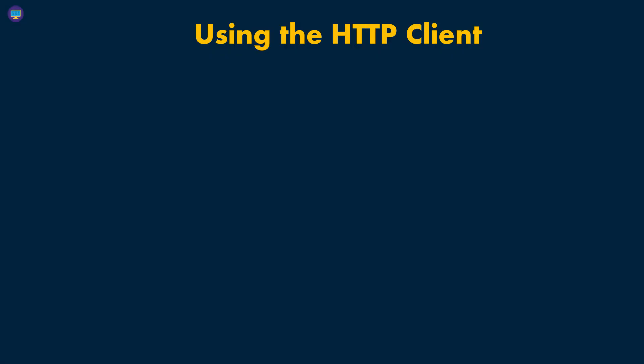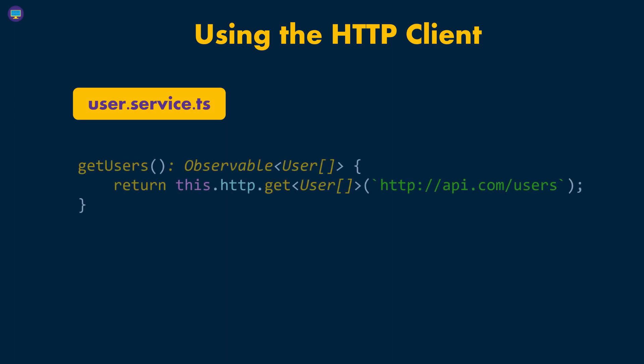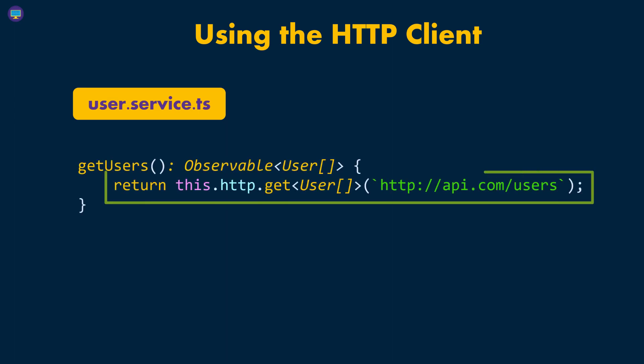Now that we have injected the HTTP client in our user service, we can make use of it in that service so that we can make HTTP requests. There are a few ways that you can make HTTP requests inside of a service in Angular, but I'm going to show you one of the most common ways. You typically see a function, and inside that function, you return the HTTP call that you're making to the API.